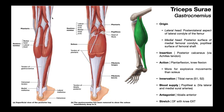A couple of notes on the origins of the gastroc. If asked which head originates more proximally, you might be tempted to say the lateral head, but the red part going up higher is actually the plantaris muscle. If you remove that, you'll see the medial head actually originates further up. Also, because the gastroc originates from the femur — proximal to the knee joint — and inserts on the calcaneus — distal to the ankle joint — the gastrocnemius crosses two joints. It crosses both the ankle joint and the knee joint, making it a two-joint muscle.